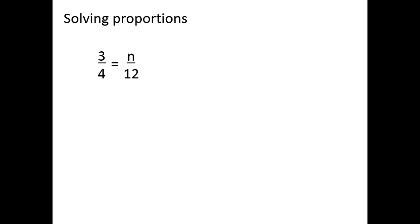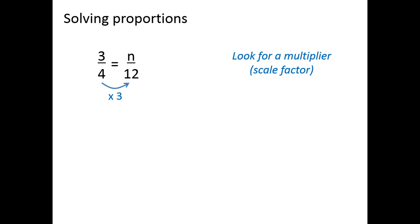Since a proportion represents two equal ratios, and we can think of those ratios as fractions, solving proportions can be done using the same techniques we've already talked about for determining whether fractions are equivalent. One of those ways is to look for a multiplier — a scale factor — that shows the relationship between the two fractions. In this case, if we look at 4 and 12 in the denominators, we can see that 4 times 3 is 12, so 3 times 3 would have to equal n, which means n equals 9.